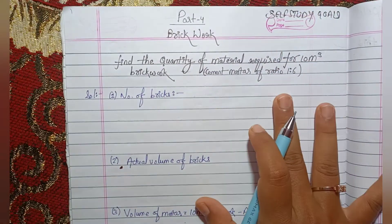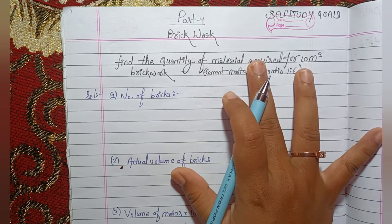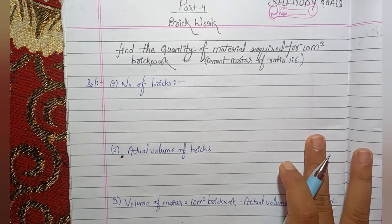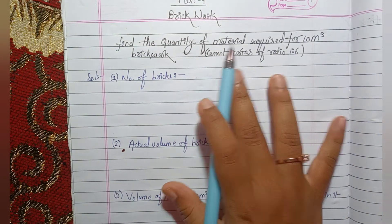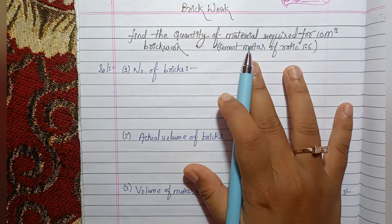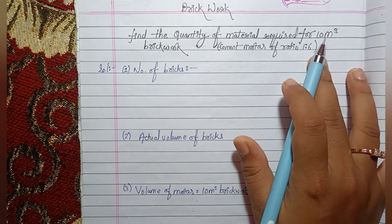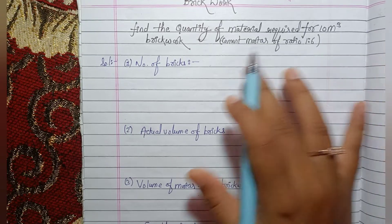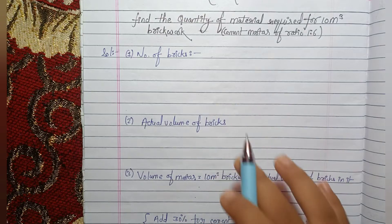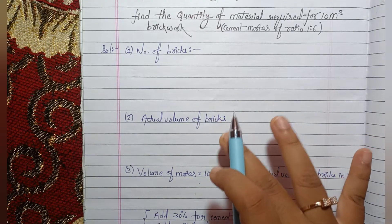Hello everyone, welcome back to my YouTube channel. This is Part 4 of the estimation series. In this video, we are going to determine the quantity of material required for brick work. The question is: find the quantity of material required for 10 cubic meter brick work, using cement mortar of ratio 1 is to 6. We will go through the solution step by step so you can remember the process easily.